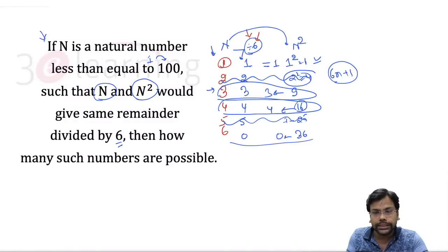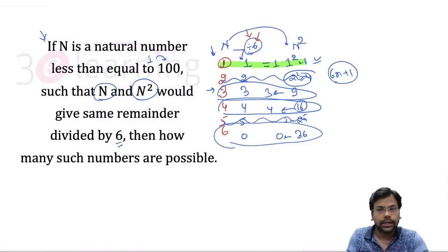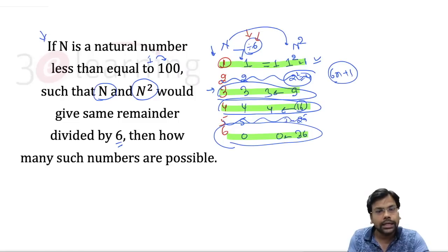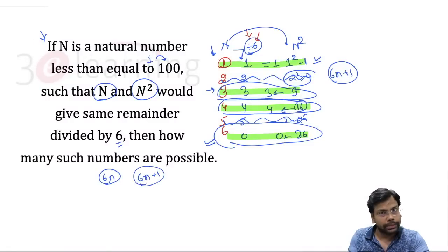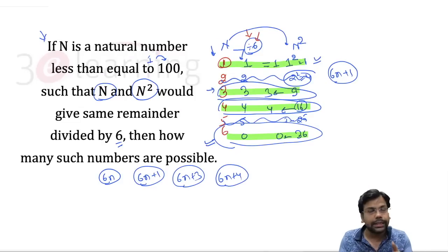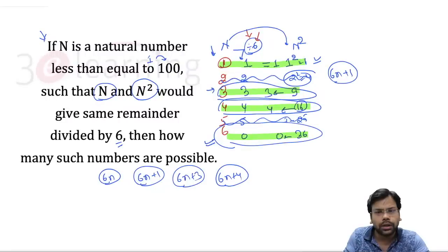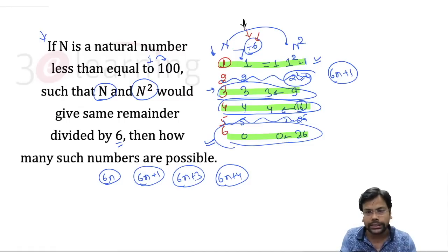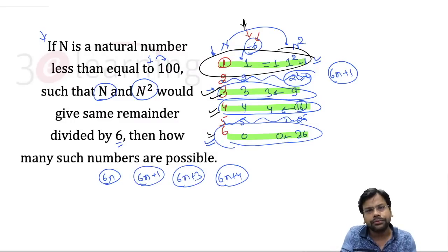6² = 36, divided by 6 remainder is 0 — same, so I want this. So the valid cases are: n giving remainder 1 (form 6n+1), remainder 3 (form 6n+3), remainder 4 (form 6n+4), and remainder 0 (form 6n). These four types give equal remainders for n and n² when divided by 6.